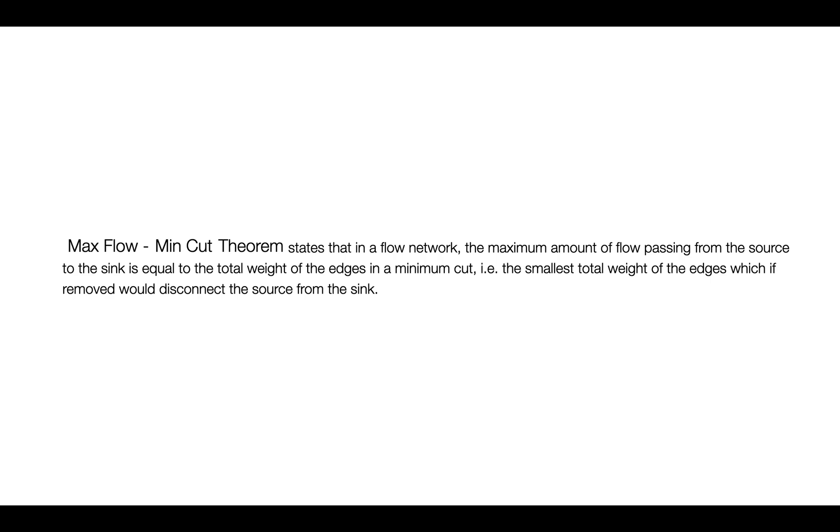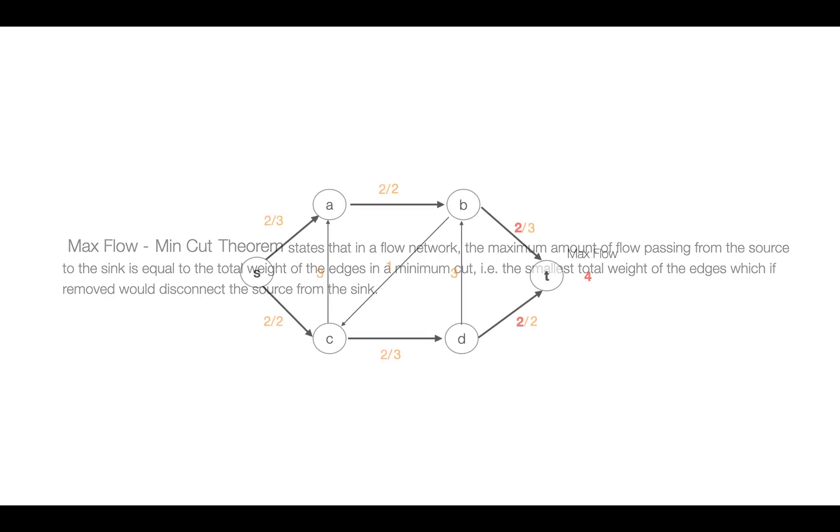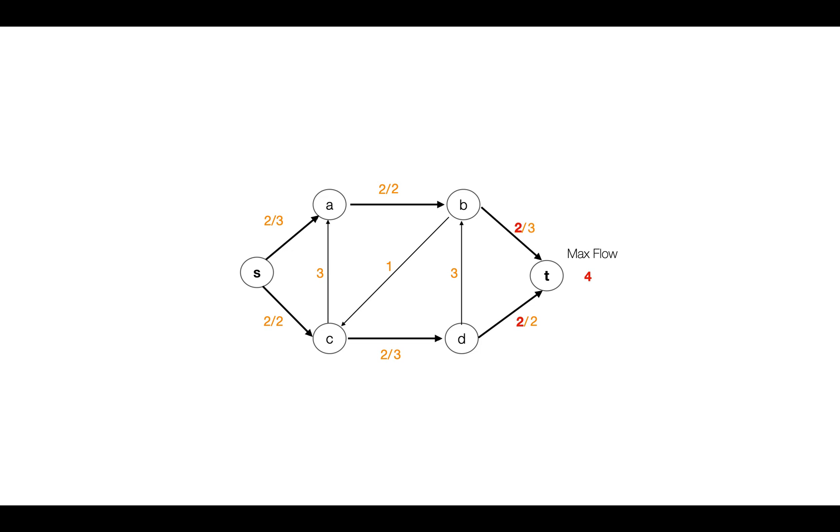It's very easy to find a minimum cut after establishing the max flow. If this is the network, remember this is the one where we are getting the max flow of 4. We have selected these two paths: S to A to B to T, and the other path is S to C to D to T. Both these paths are getting a flow of 2 which makes a total of 4. To find a min cut in this network after establishing the max flow, we just do a graph search.